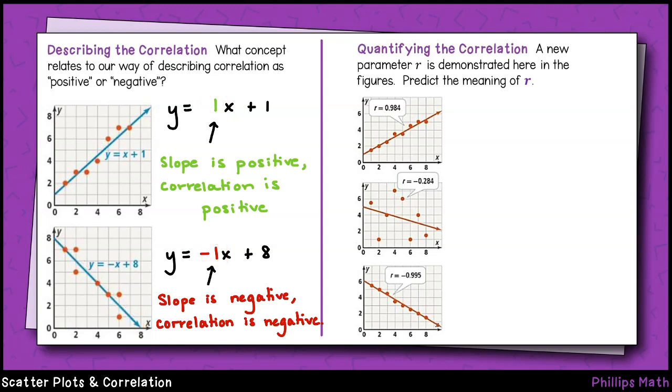Another outcome from performing a linear regression analysis is referred to as a correlation coefficient, or r for short. It gives us a measure of the strength of the relationship between the two variables. R can range from positive 1, a perfect positive correlation, to negative 1, a perfect negative correlation. If r equals 0, that means there is no correlation.